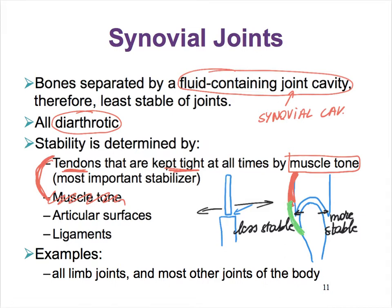If we have some contraction in that muscle, it's going to keep the tendon tight. And that keeps our joint stable. This is the most important stabilizing factor—muscle tone—because of how it keeps the tendons taut or tight at all times.